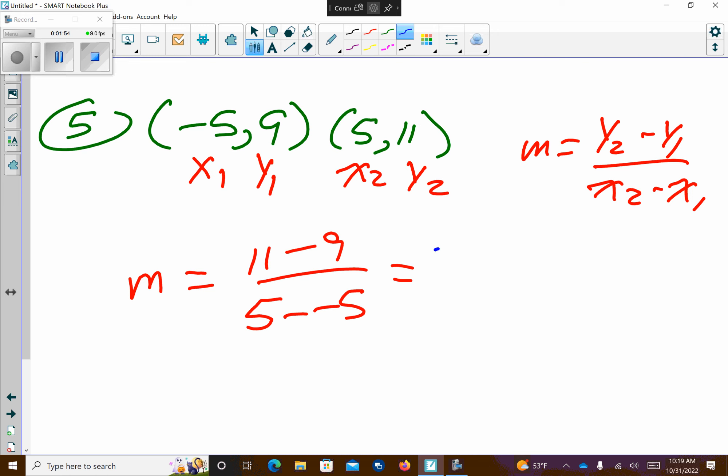So on top, 11 minus 9 is 2. That minus, minus turns into a plus, right? So I get that. I could leave that as an answer or I could convert it to that. Either one. Both of those are totally fine for your slope.